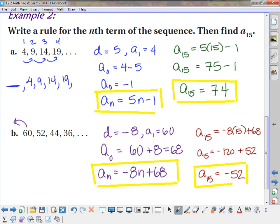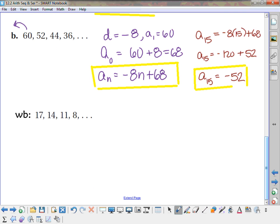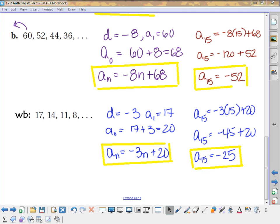Okay, so now I have one for you guys to do all by your lonesome, completely on your own. 17, 14, 11, and 8. All right, so as I walked around, it looked like everybody was getting it. A sub n is negative 3n plus 20, and a sub 15 was negative 25.